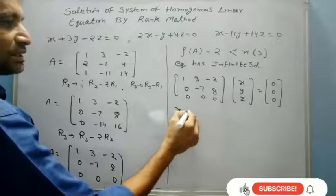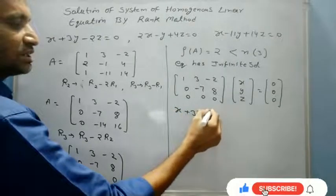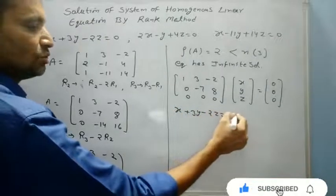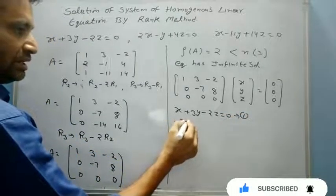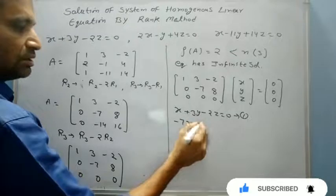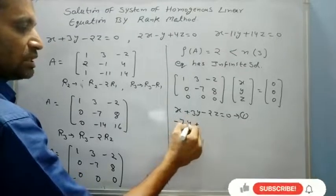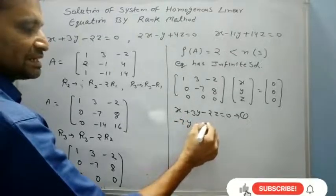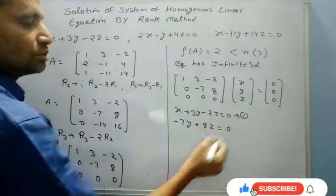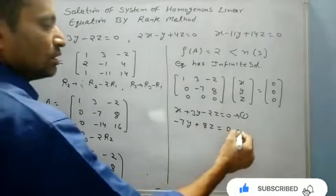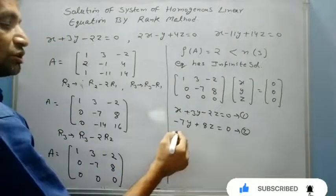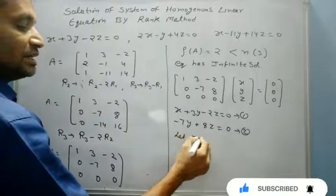x plus 3y minus 2z equals 0. First equation. Minus 7y plus 8z equals 0. Put this as equation 2. Let z equal K.